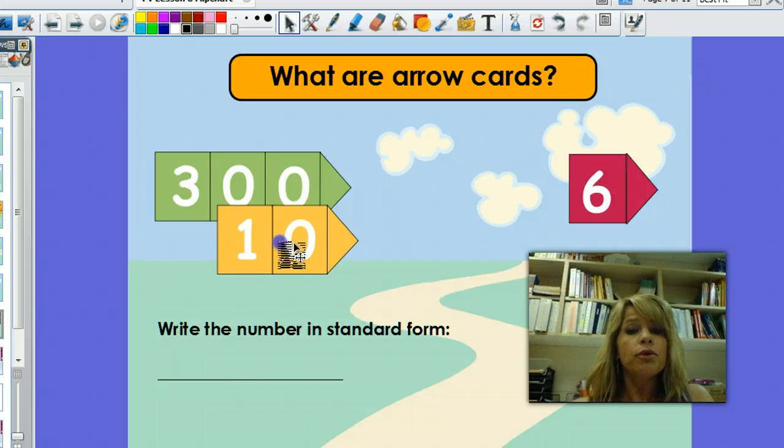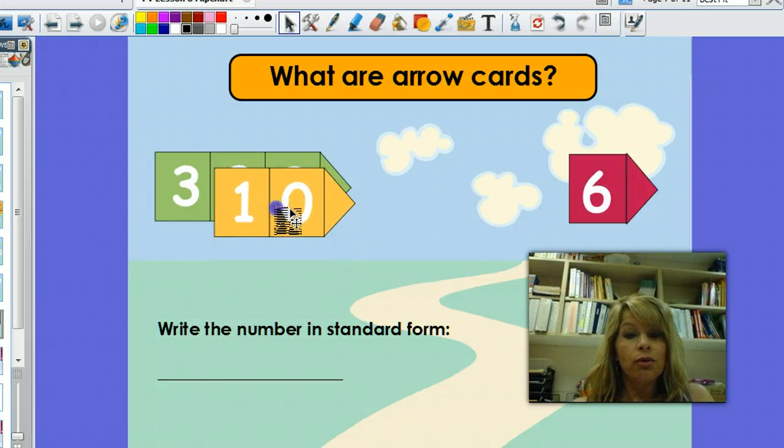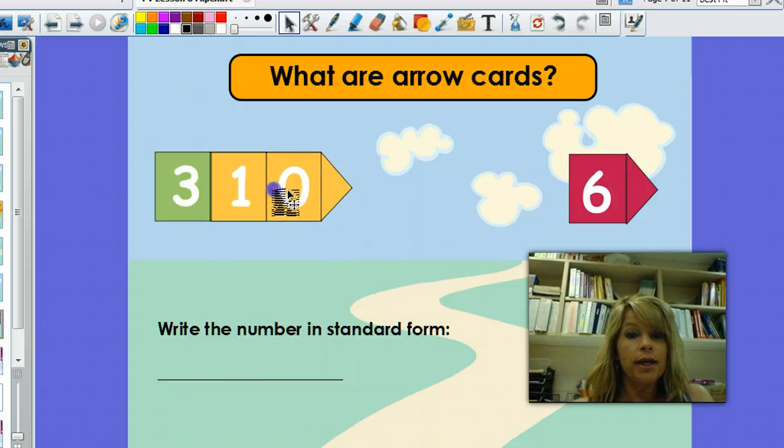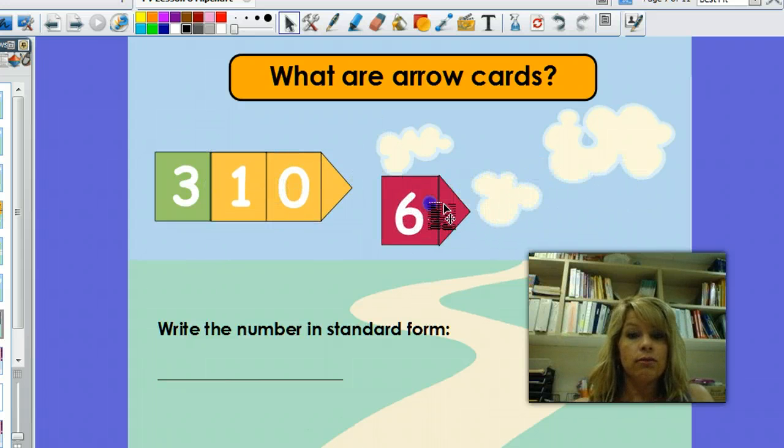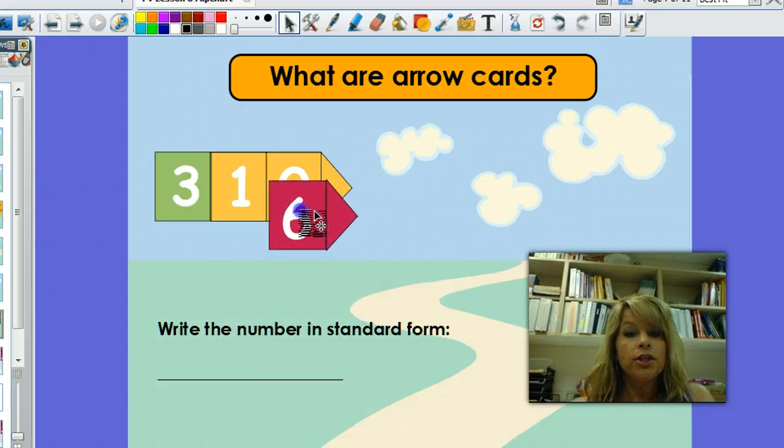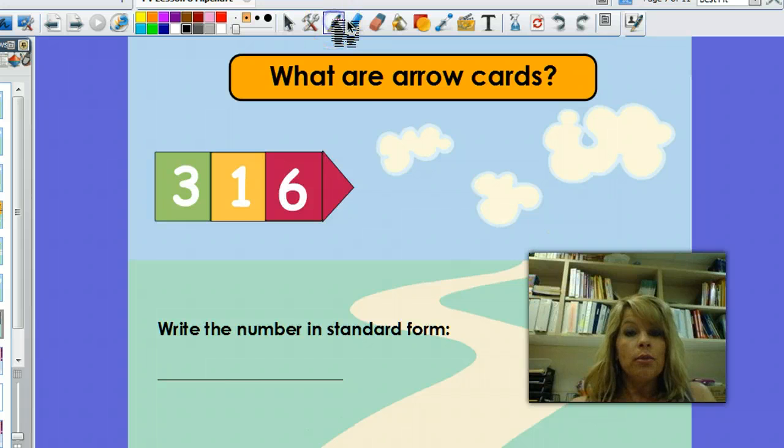So I'm going to take this ten and put it right on top, matching that pointy arrow part. And I'm going to take this six, which is six ones, and match that pointy arrow right there. So what is the number that we have made with the arrow cards? We've made the number 316.